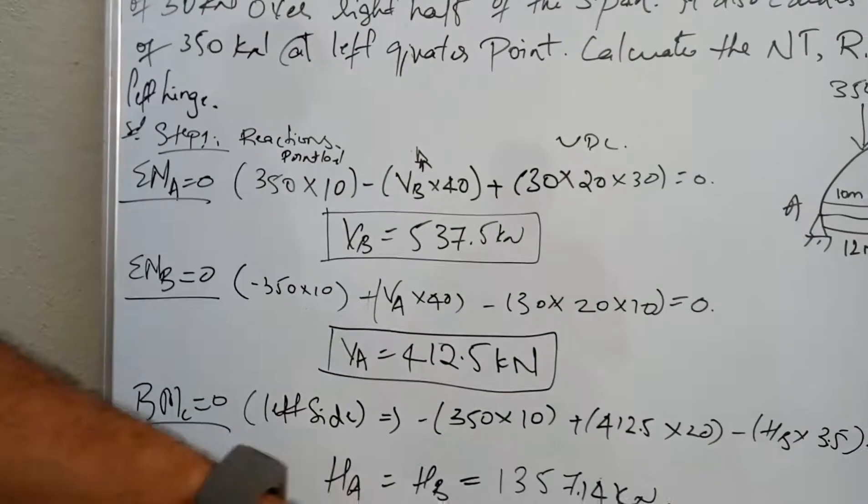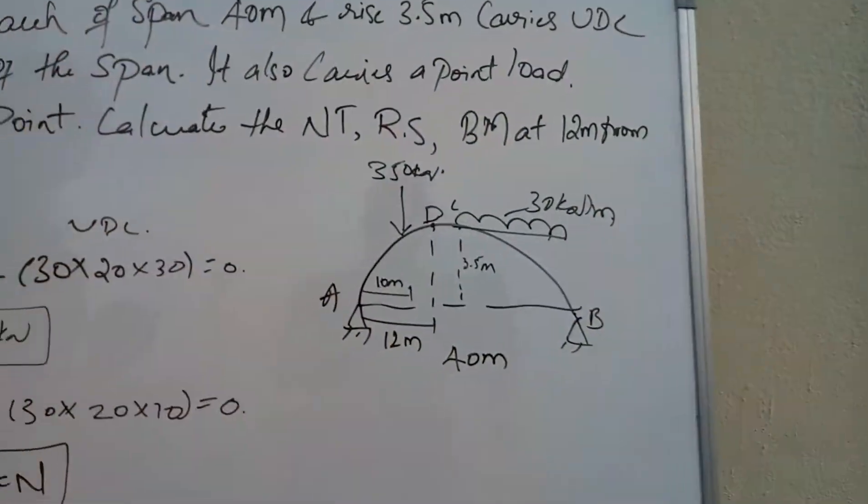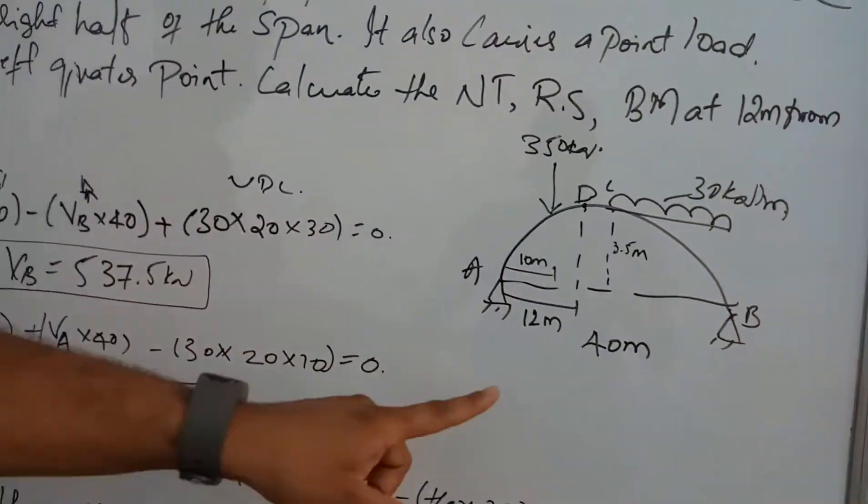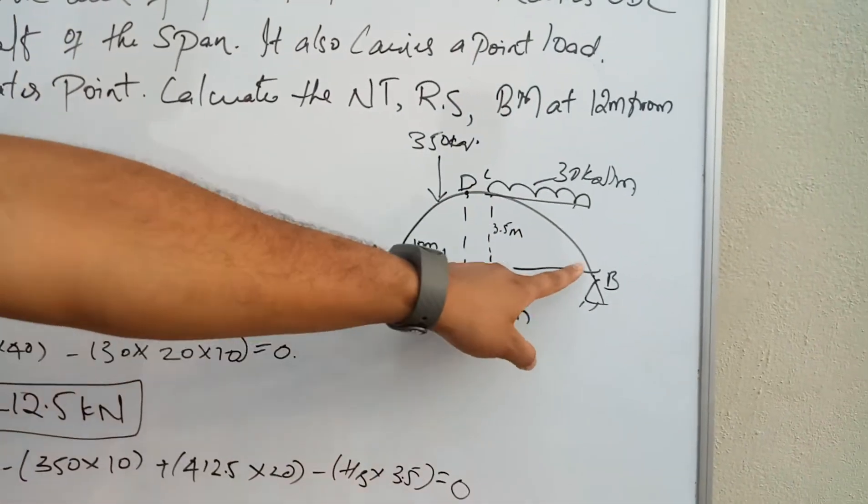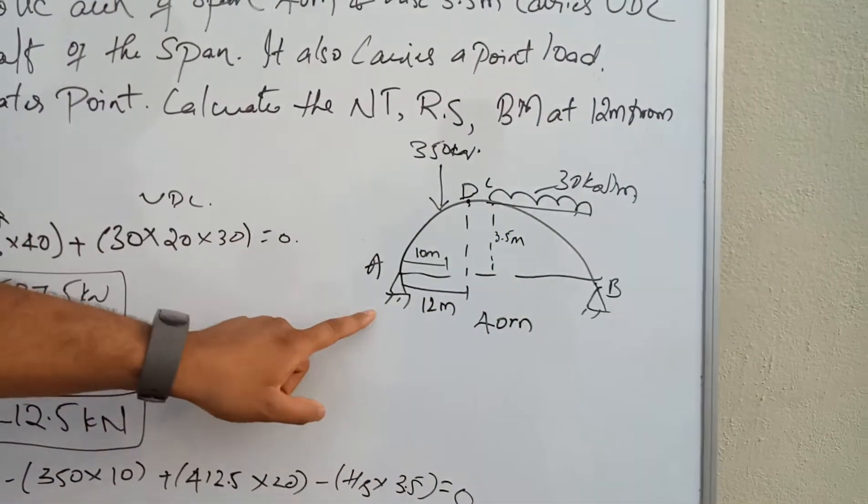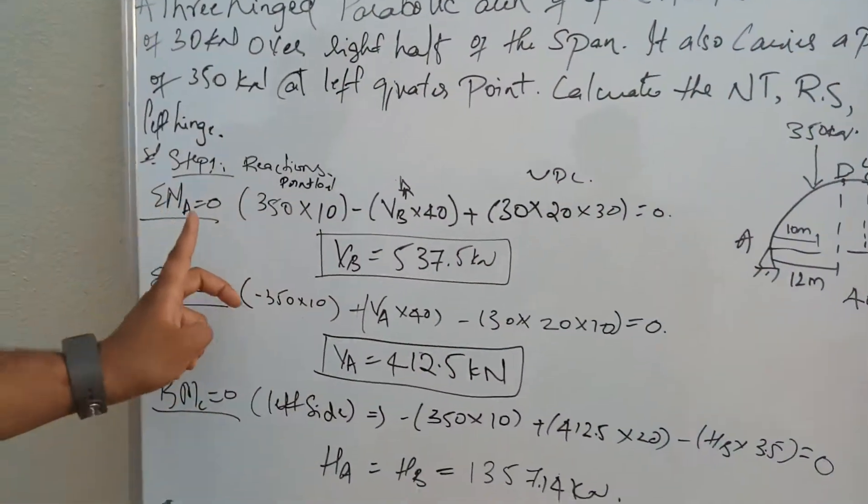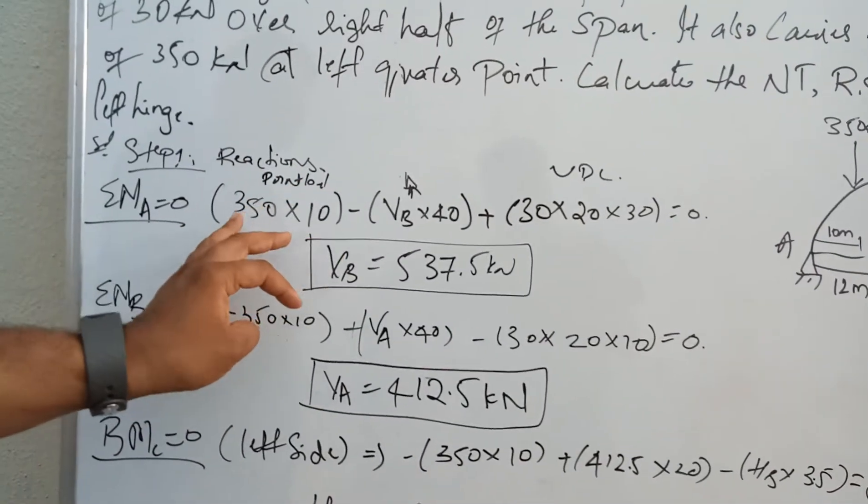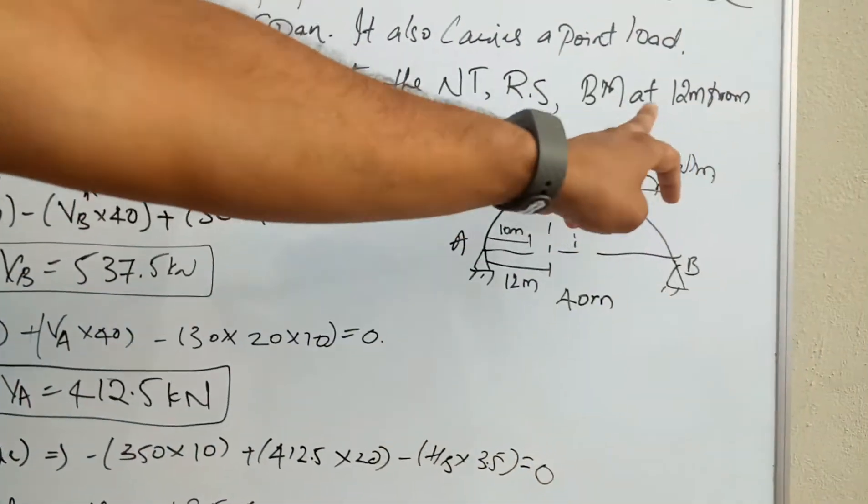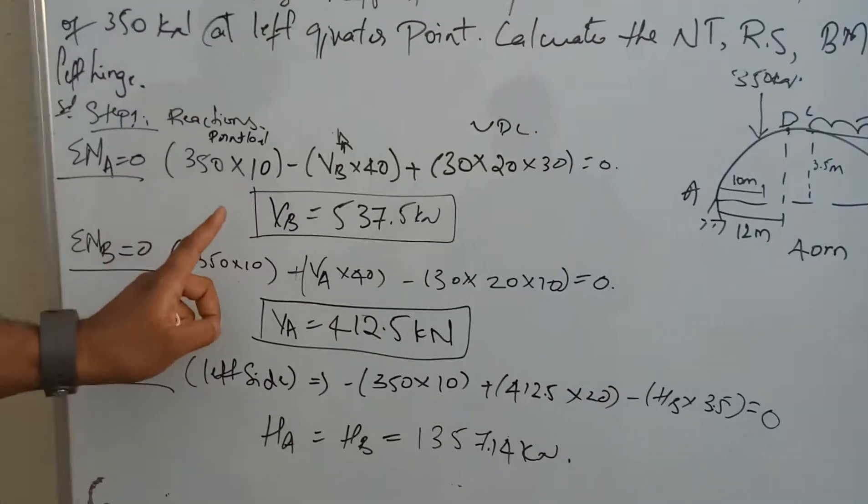VB acts over the complete 40 meters, and 30 into half of this is 20. So this is 350 into 10. Now we got the value of VB.